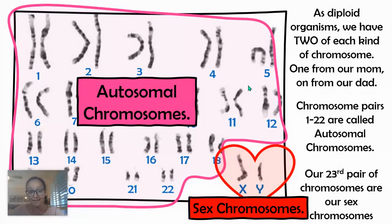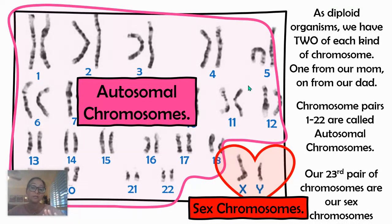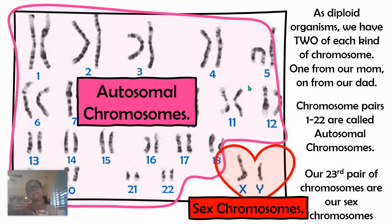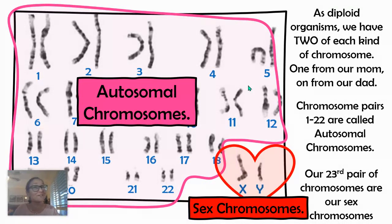And then we have sex chromosomes that carry the information for us to develop into a male or a female. We can divide genetics into two categories: Mendelian genetics, which looks at how traits on chromosomes one through 22 are passed from parents to offspring, and non-Mendelian genetics, which includes how traits are passed on sex chromosomes — on the X and Y. My first couple of videos will deal with Mendelian genetics, and then we'll have a separate video on traits carried on the X and Y chromosome.